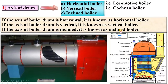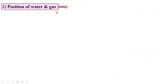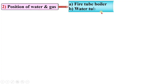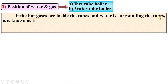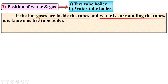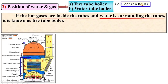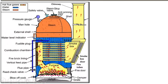According to the position of water and gas, boilers are classified as fire tube boilers and water tube boilers. If the hot gases are inside the tubes and water is surrounding the tubes, it is known as a fire tube boiler. The example is the Cochran boiler, and here you can see inside the tubes there are hot gases, that's why it is called a fire tube boiler.